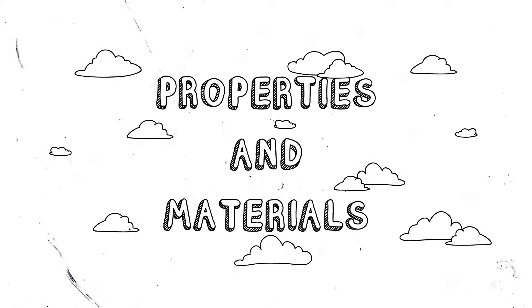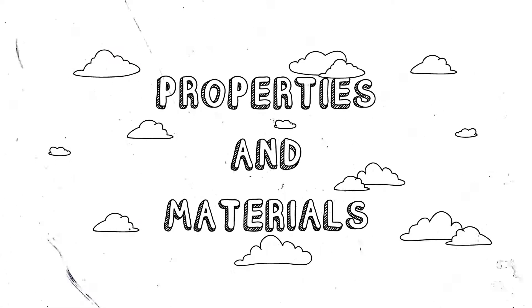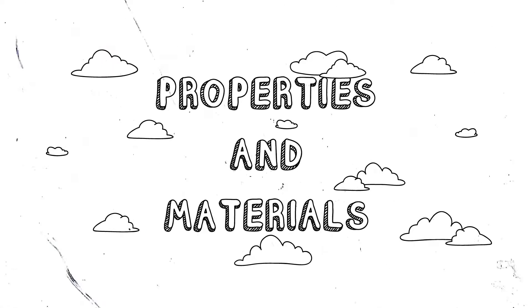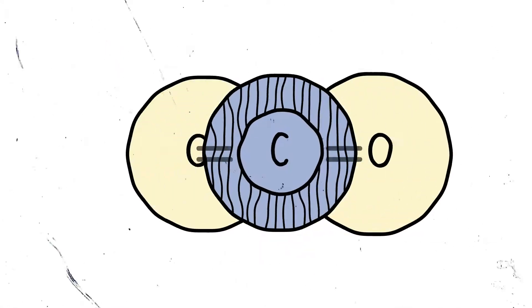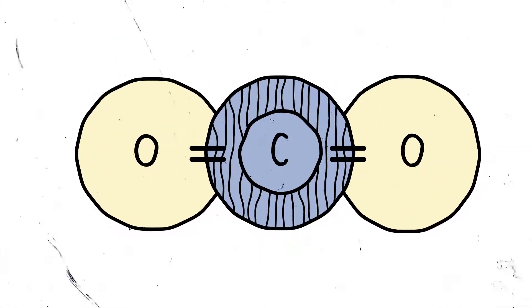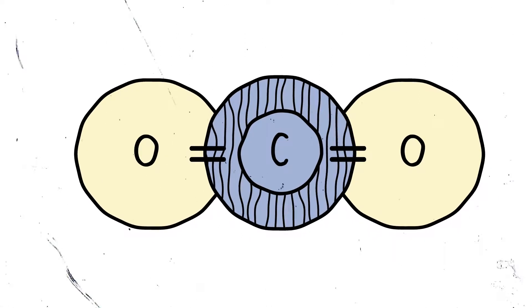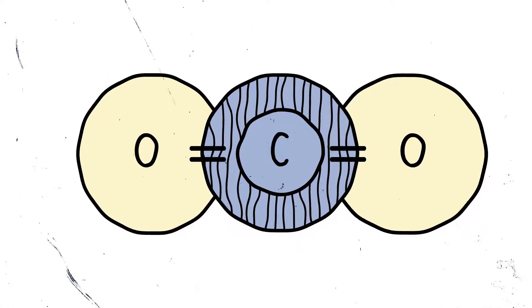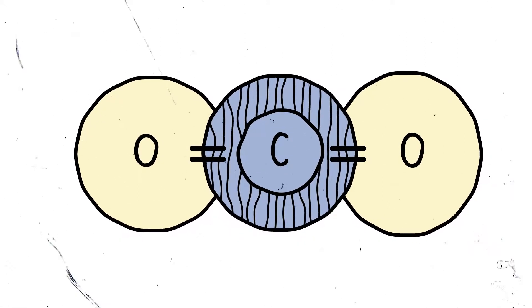Making a useful product depends a great deal on the material you choose and the properties of that material. The properties of the material depend very crucially on the nature of the atoms and molecules in the material and how they are held together.